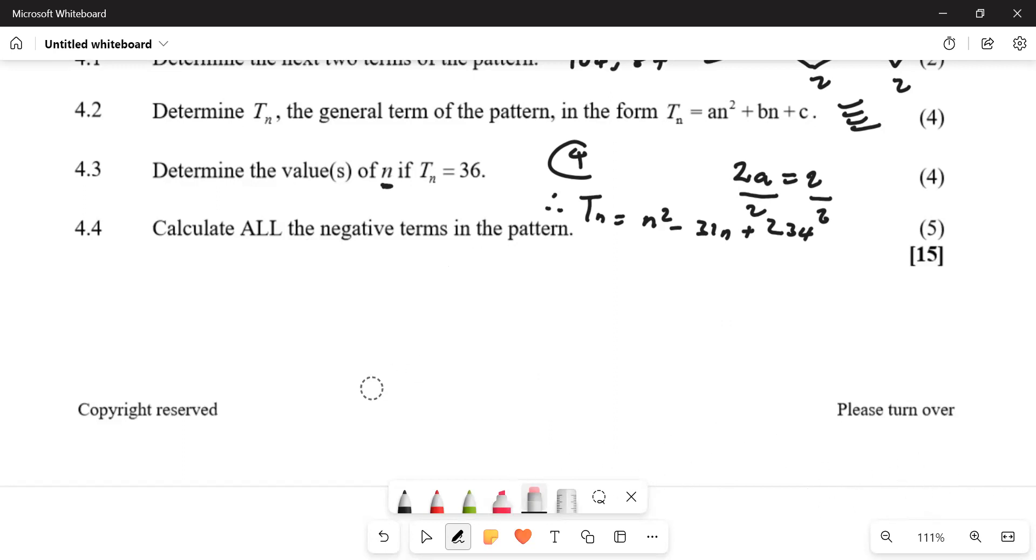When they're talking about negative terms, it means Tn which is less than zero. So n squared minus 31n plus 234 should be less than zero.